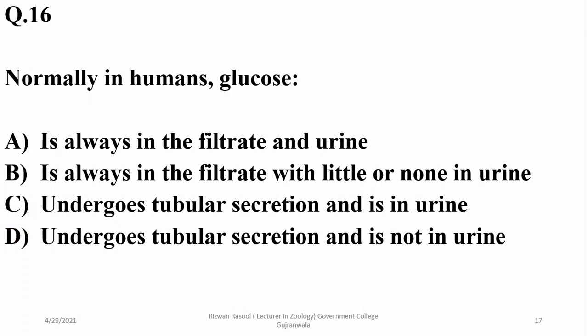Glucose is always present in the filtrate, but with little or sometimes none in the urine, so beta seems the best option.